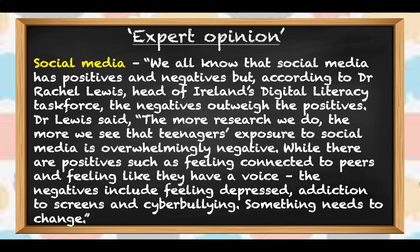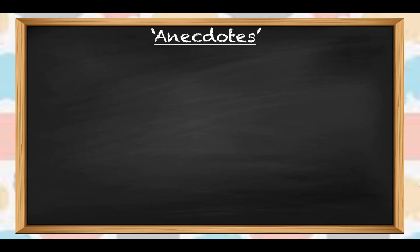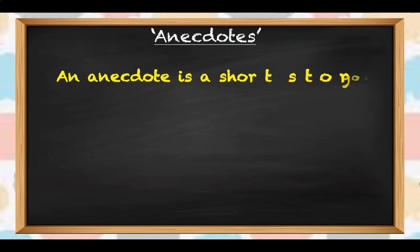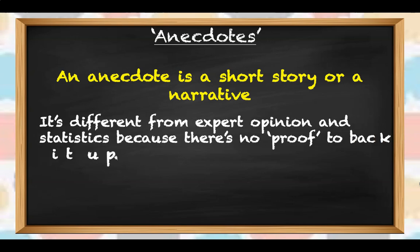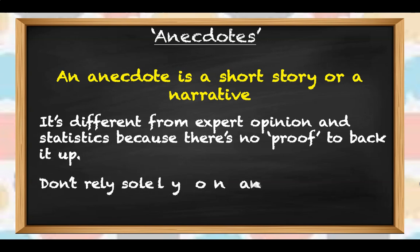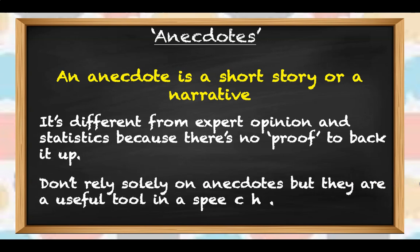So there are two examples of how to incorporate an expert opinion into your writing. The last thing we're going to look at in this video is the use of anecdotes. An anecdote is a short story or a narrative. It's different from expert opinions and statistics because there's no proof to back it up — it's simply someone's experience. While it's important that you don't rely solely on anecdotes because they often aren't as convincing as statistics or experts, they're a great opportunity to use emotive language.